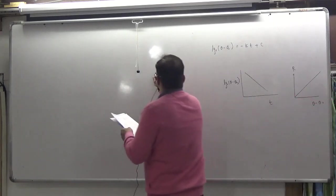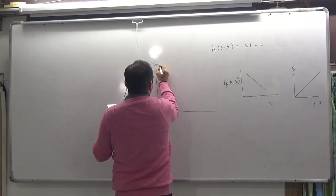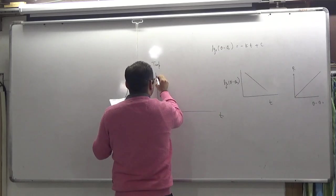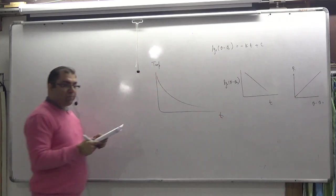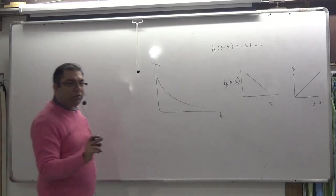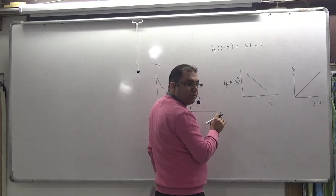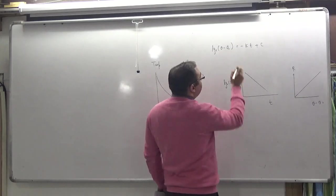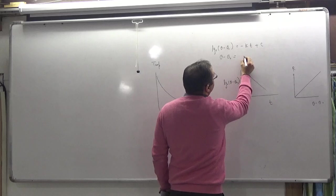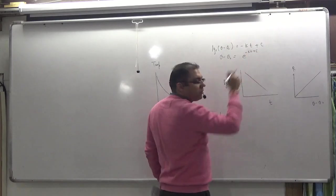The first graph on page 30 shows temperature versus time, which is an exponential graph. The result is: theta minus theta-not equals e raised to the power (minus k·t plus c). Therefore theta equals theta-not plus e raised to the power (minus k·t plus c). At t equals zero, this gives the initial temperature, confirming it is an exponential graph.